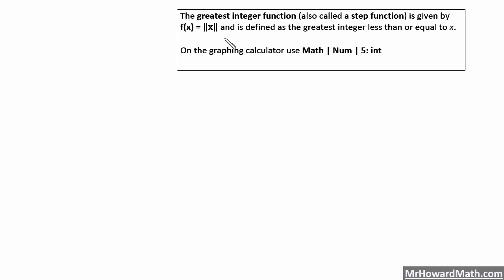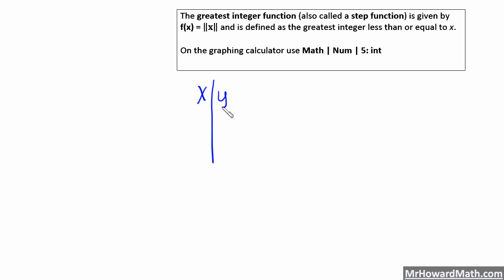The definition is that the greatest integer function is defined as the greatest integer less than or equal to x. Remember, an integer is like 1, 2, 3, negative 1, negative 2, negative 3 — positive and negative whole numbers. So we'll start with a simple table of inputs and outputs, x's and y's.